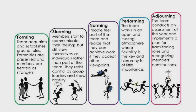The first stage is Forming. The team meets, acquaints itself, and establishes ground rules — formalities are preserved and members are treated as strangers. Imagine the first day of your class: you have 30 new students, you form groups, each member gets to know others, and you set ground rules — like staying in class until break time or wearing proper uniform. It's still the first day, so members are essentially strangers.